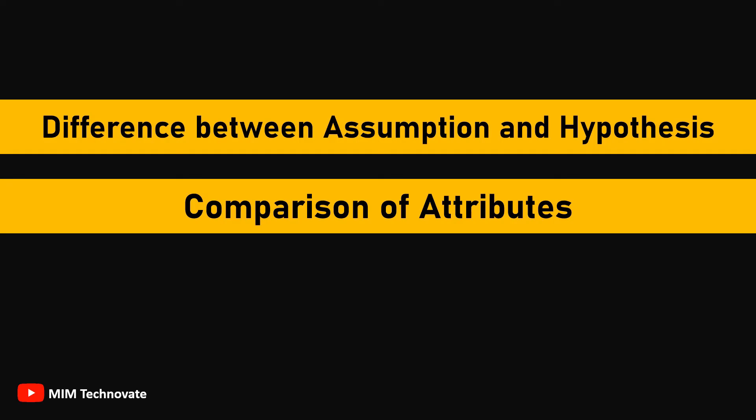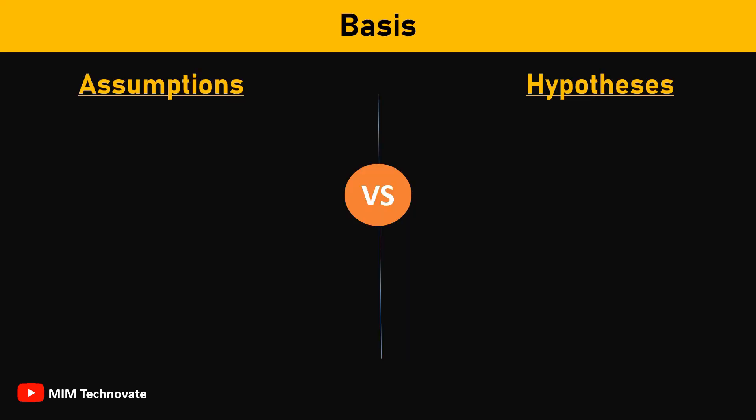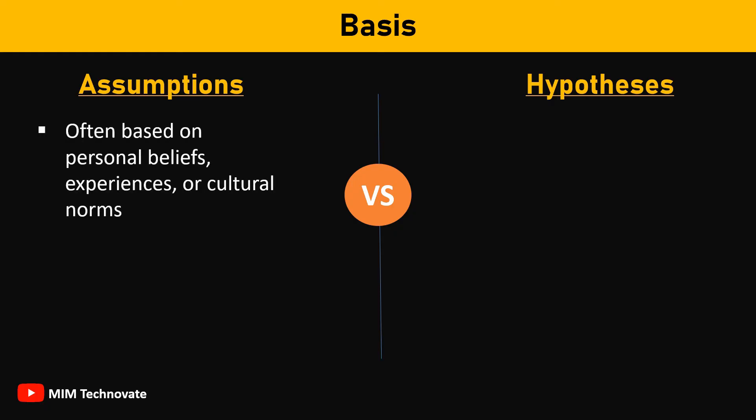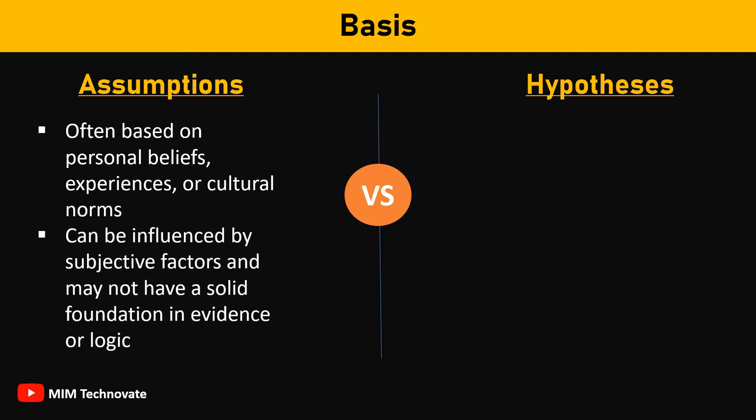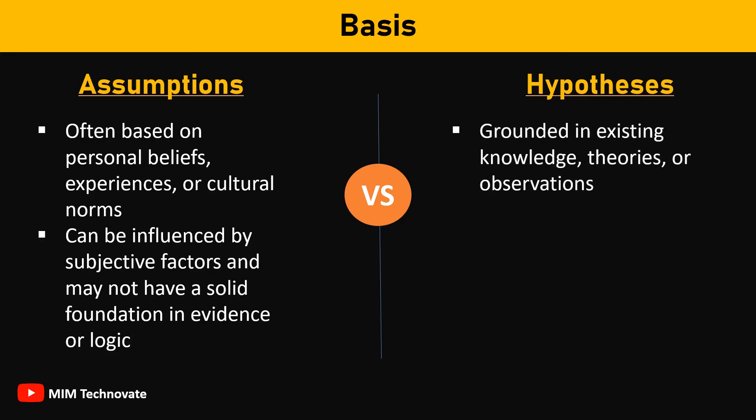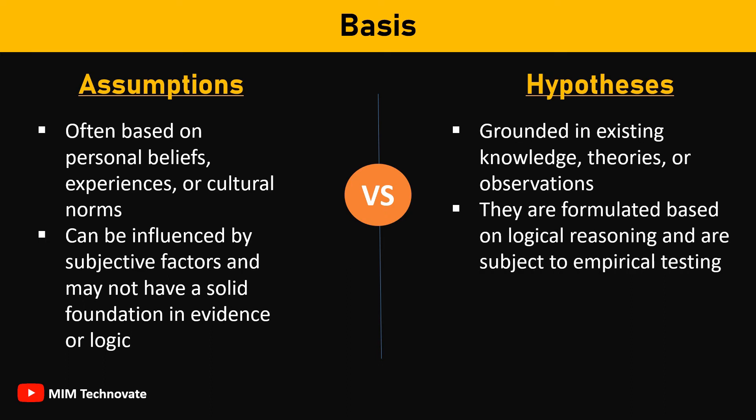Comparing attributes — Basis: Assumptions are often based on personal beliefs, experiences, or cultural norms. They can be influenced by subjective factors and may not have a solid foundation in evidence or logic. Hypotheses, on the other hand, are grounded in existing knowledge, theories, or observations. They are formulated based on logical reasoning and are subject to empirical testing.